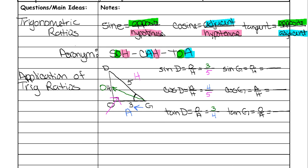Now we just fill in with our pieces. Sine is opposite over hypotenuse, cosine is adjacent over hypotenuse, and tangent is opposite over adjacent. Our opposite is now four, so anywhere you see an O, write a four. Our hypotenuse is still five, so anywhere you see an H, write a five. And adjacent is three, so anywhere you have an A, write a three. Those are the six trig ratios for this triangle.